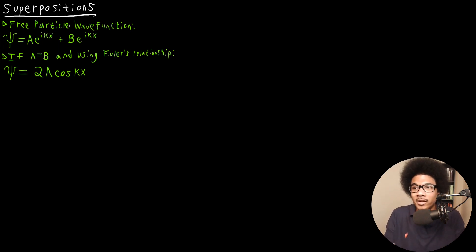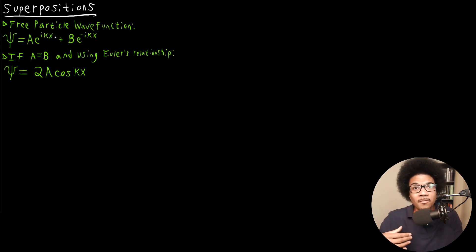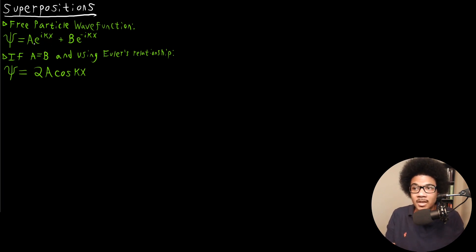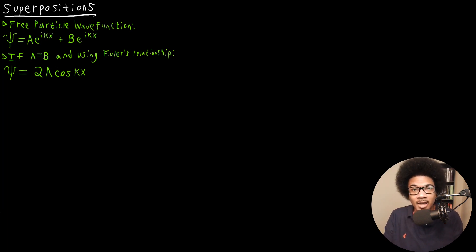To build this example, I want to consider our free particle wave function. The free particle wave function — we've seen this before — defines a free particle that is free to travel in any direction and is not under the influence of any potential. In the video on probability density, we saw that if we assume the constants A and B are equal and use Euler's relationship, instead of being defined by a linear combination of functions, it collapses down to a single function: just 2A cosine kx.